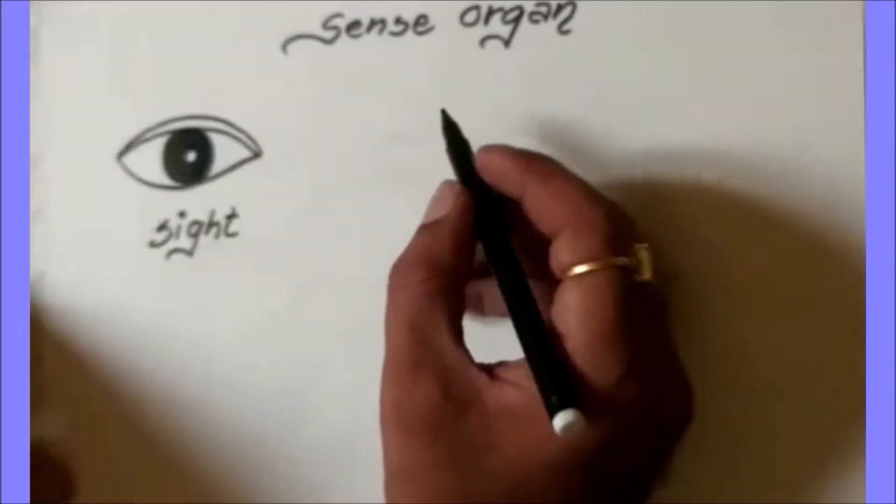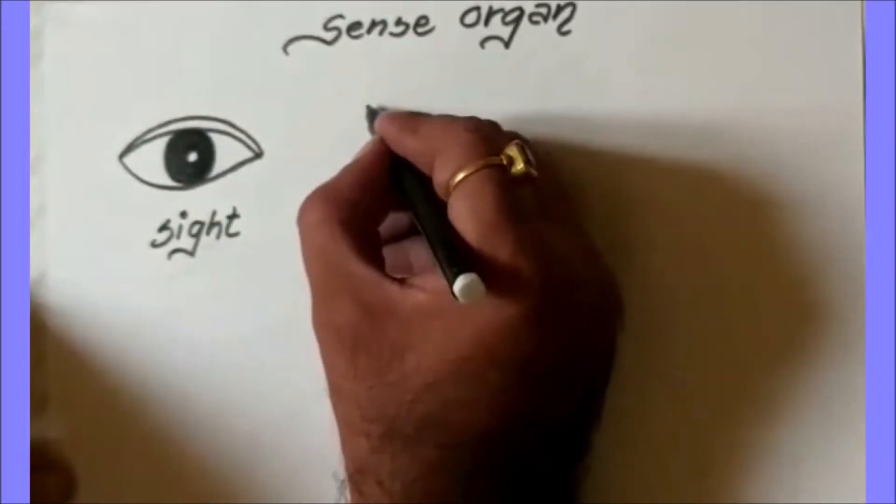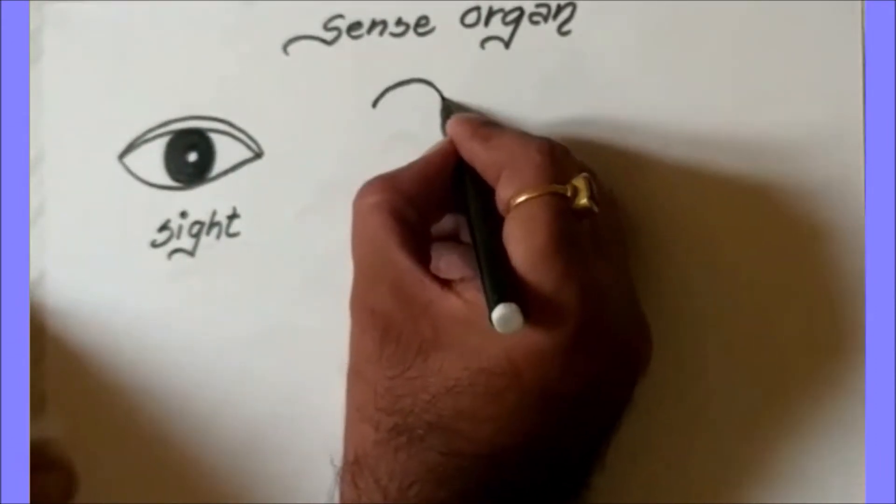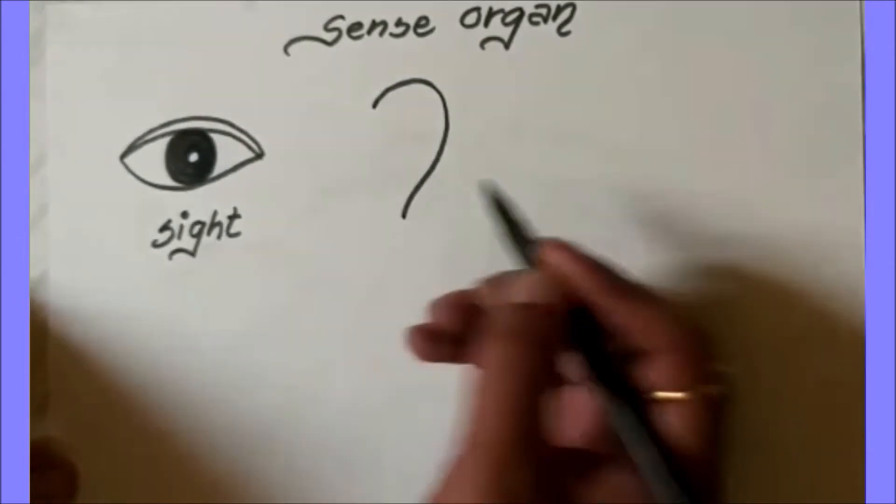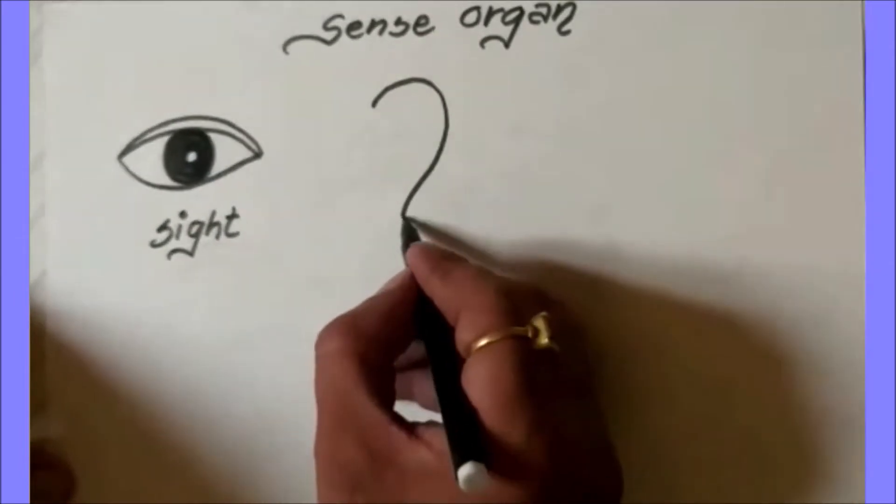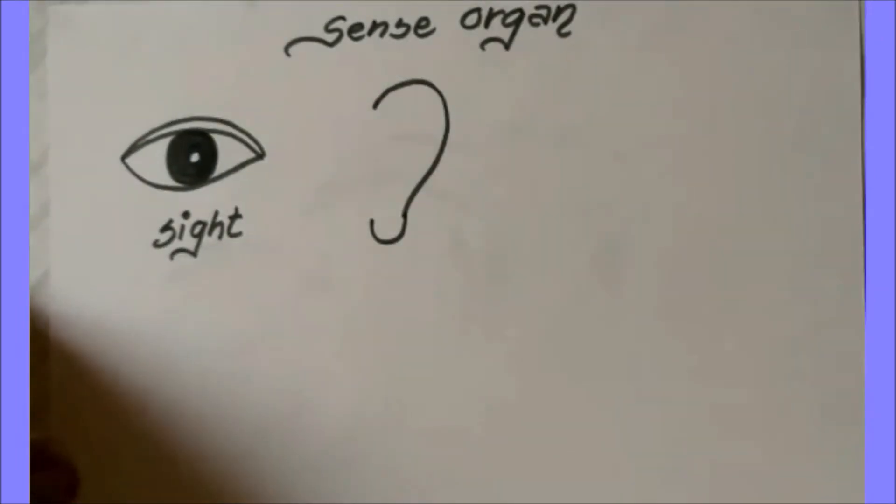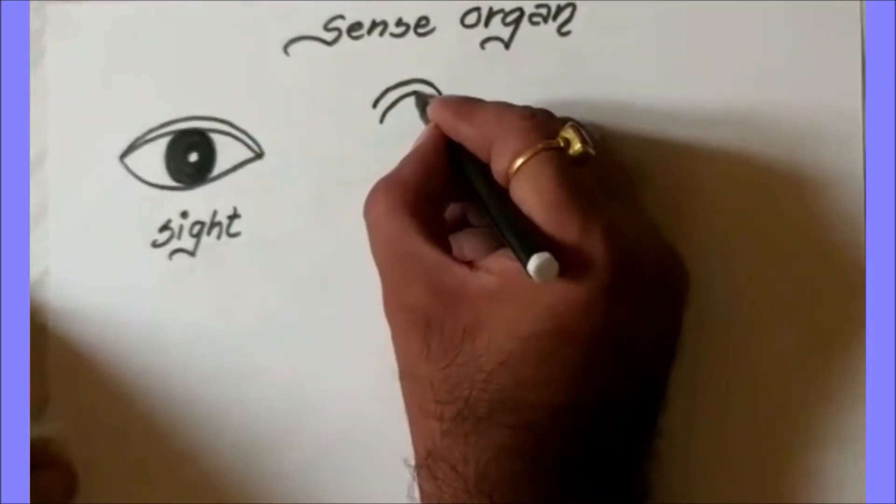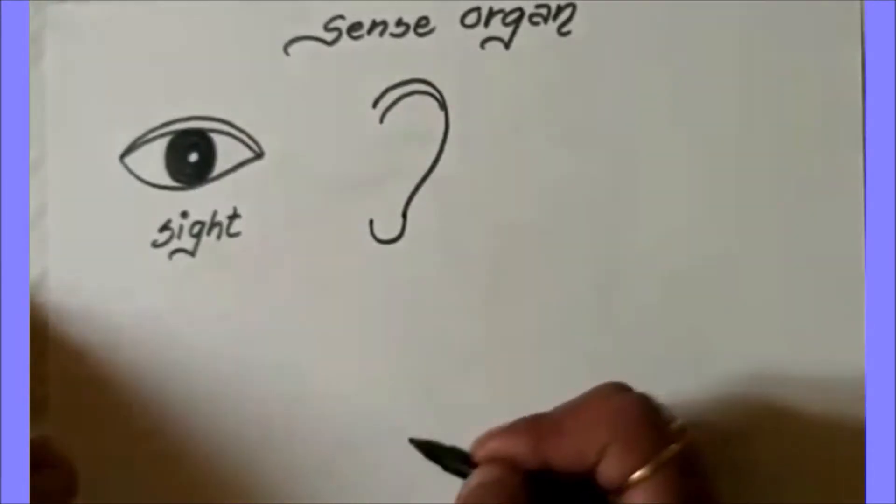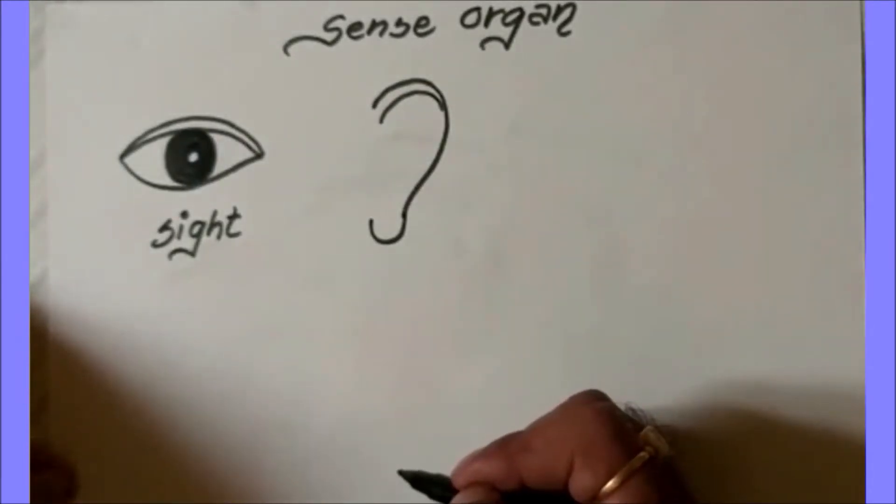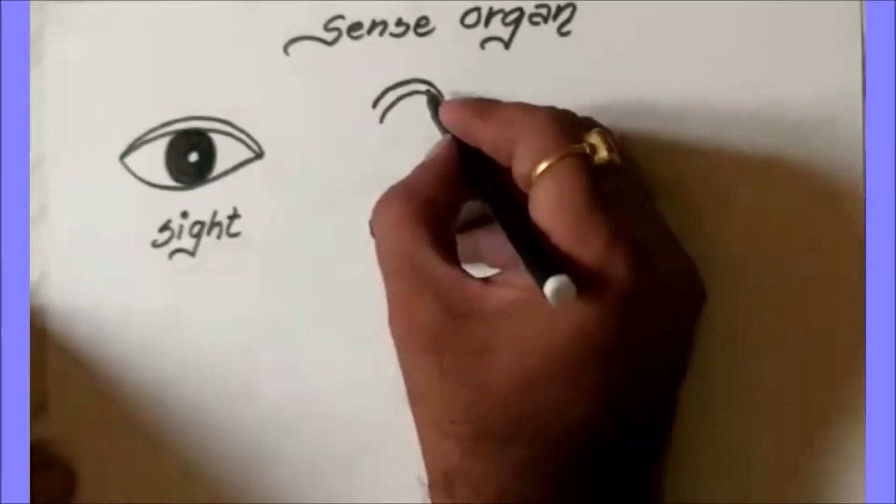Now I am going towards ears: one curl like a question mark, again small curl which is coming inside, again one curl touching to the curl of the first portion.